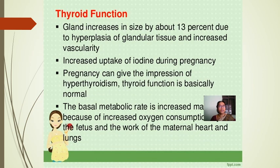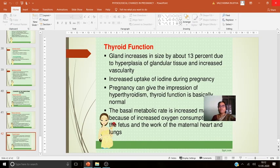Thyroid function: the gland increases in size by about 13% due to hyperplasia of glandular tissue and increased vascularity. Increased uptake of iodine occurs during pregnancy, and pregnancy can give the impression of hyperthyroidism. Thyroid function is basically normal, but the basal metabolic rate is increased mainly because of increased oxygen consumption of the fetus and the work of the maternal heart and lungs.